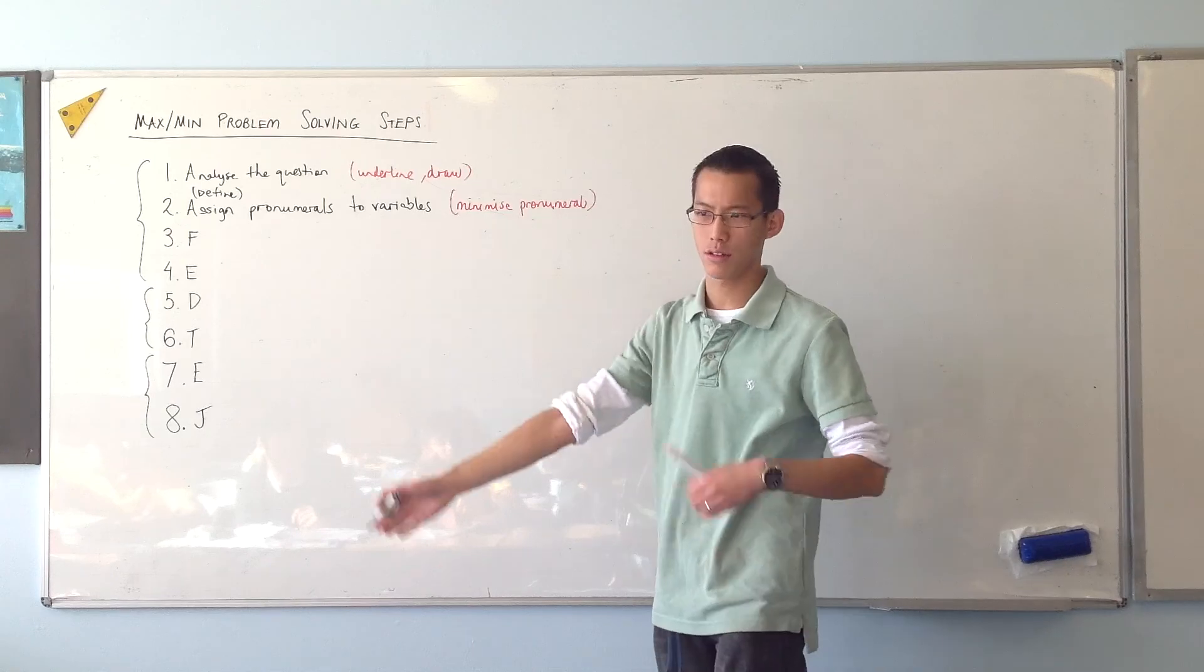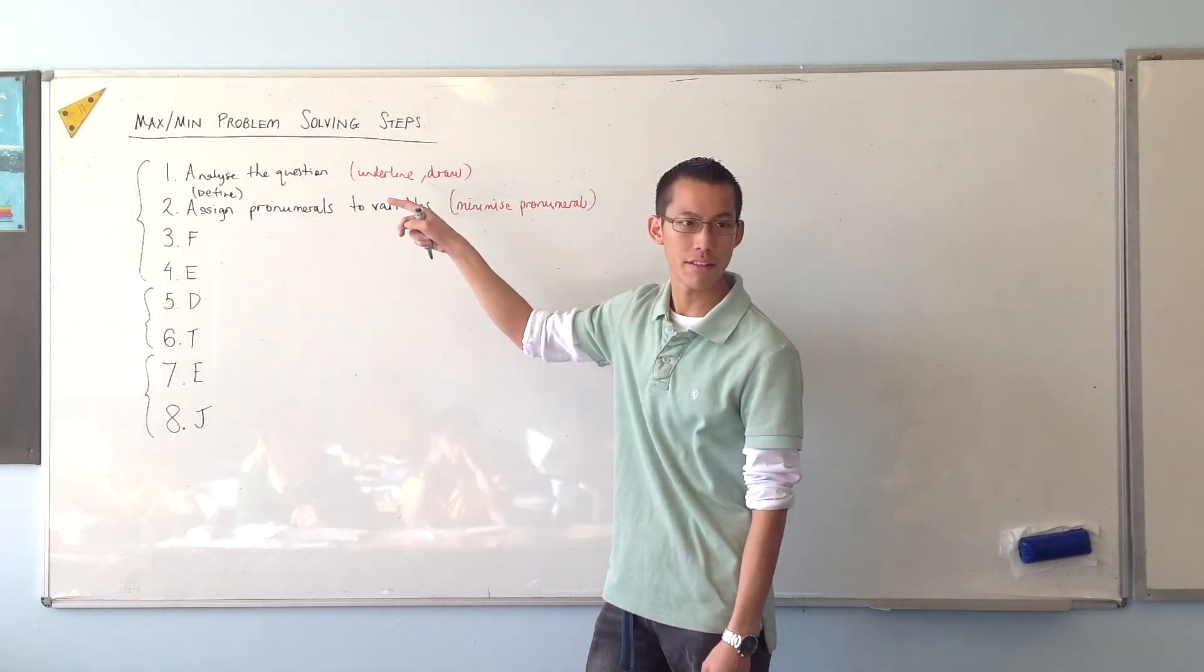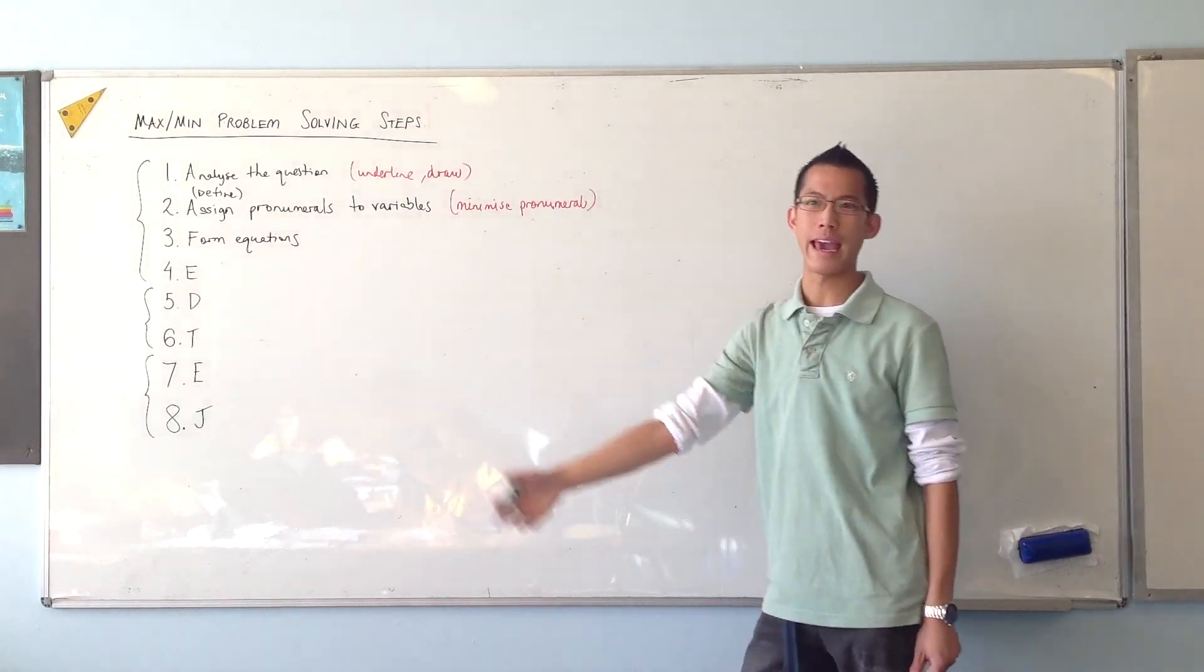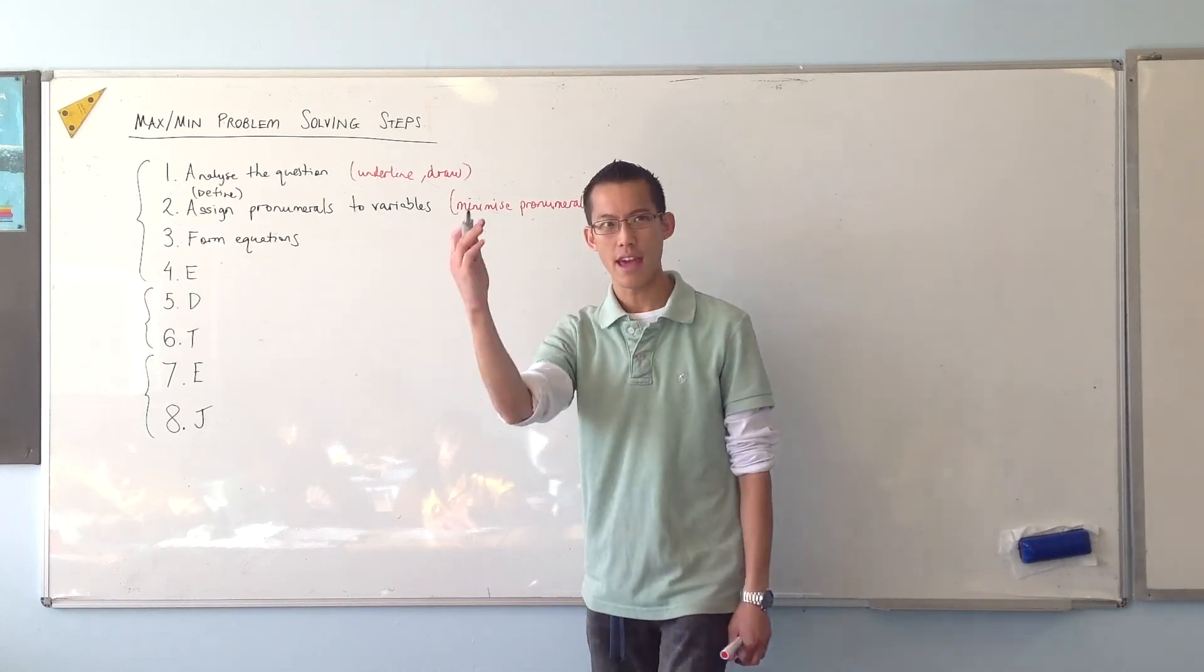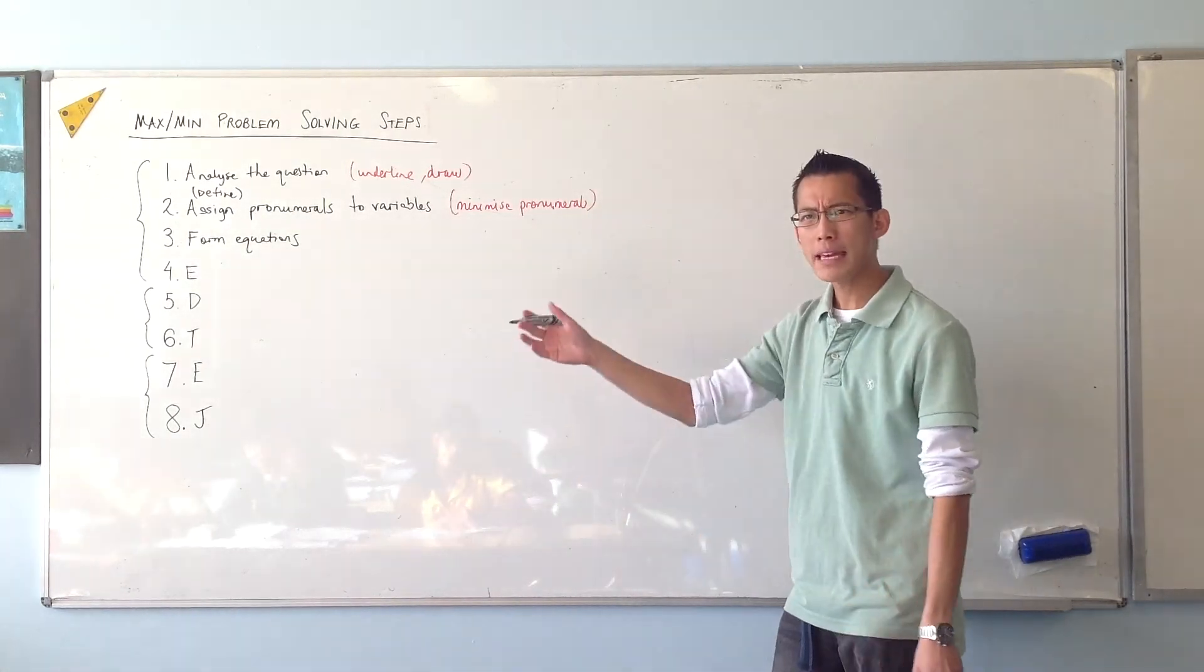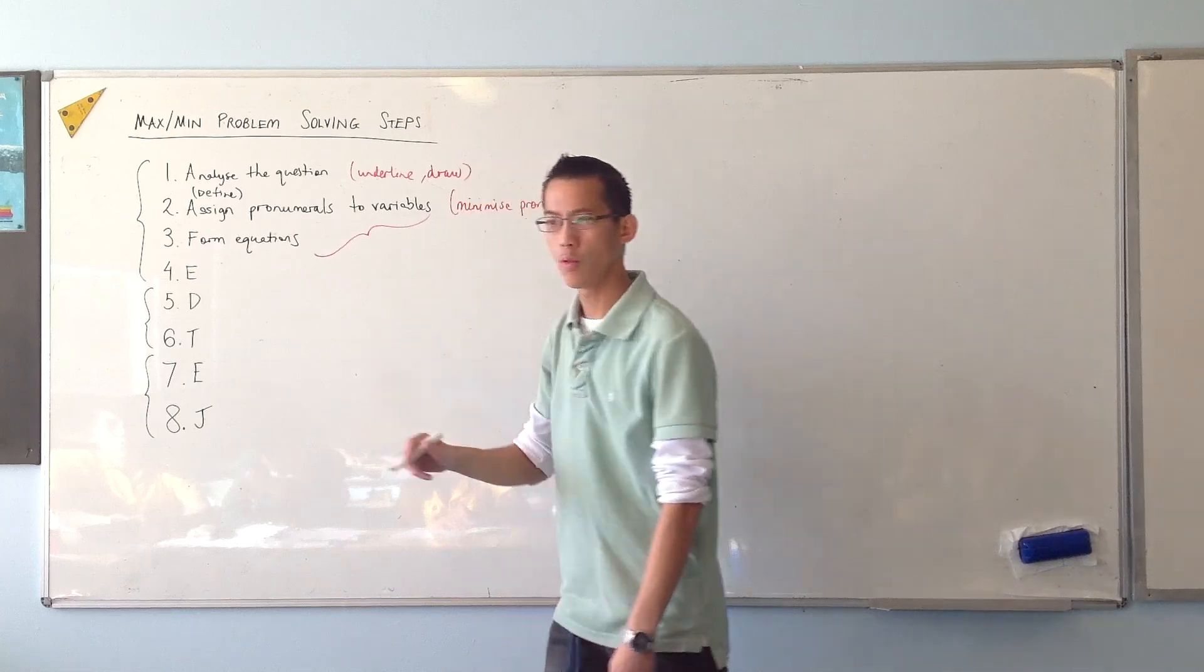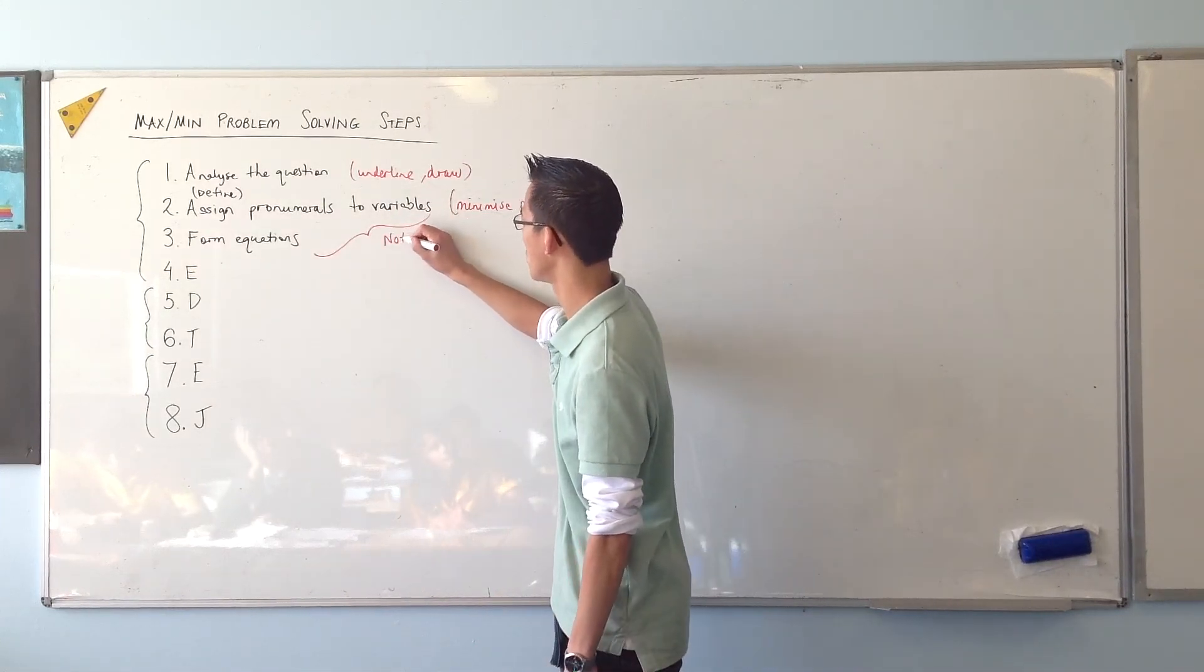All right, now once you've got your x's or your y's or your n's, then you want to take these bits that you underlined in the question, the important details, and you want to form some equations out of it. So for instance, we've formed equations like x plus y equals 8 because those two numbers add up to 8, or equations like the volume is x times 20 minus 2x and so on. So form some equations, but be careful.